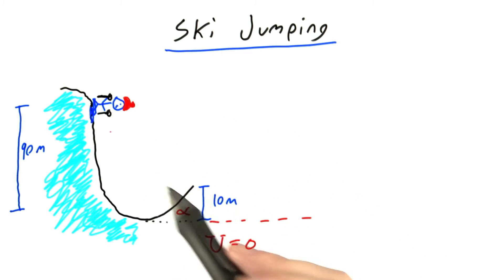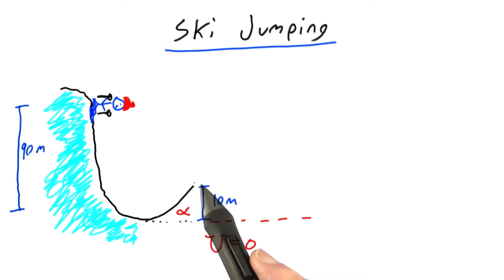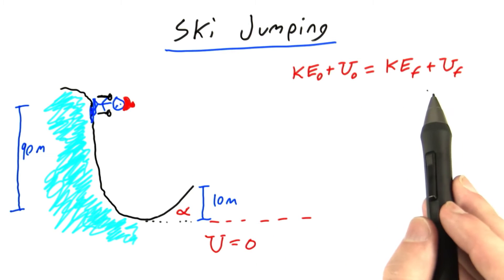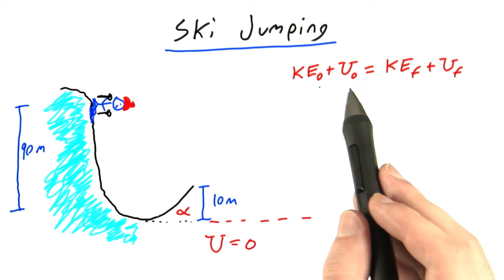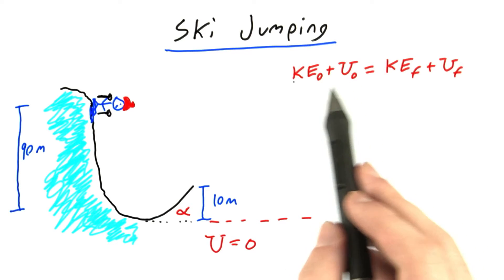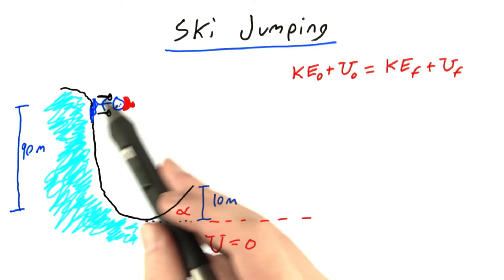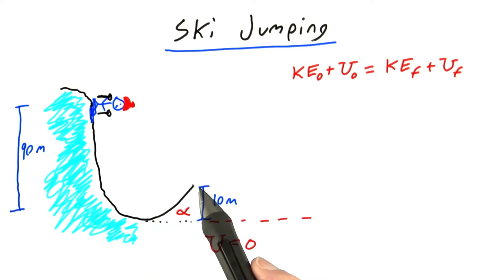I want to figure out, using energy techniques, what his kinetic energy and therefore his speed will be when he's leaving the ramp right here. We know from conservation of energy that the skier's kinetic energy and potential energy must add up to the same value in both his starting position and when he's just leaving the ramp.